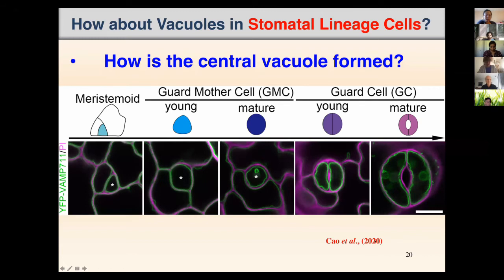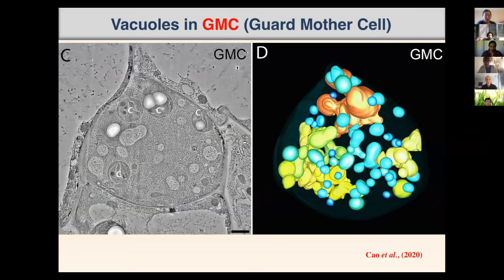One student spent more than three years to section individual cells and perform electron tomography. Here is a stomatal mother cell — on the left are the tomography slices, and on the right is the 3D model. You can see they contain different types of vacuoles: a larger one, a medium-sized one, and a small one.